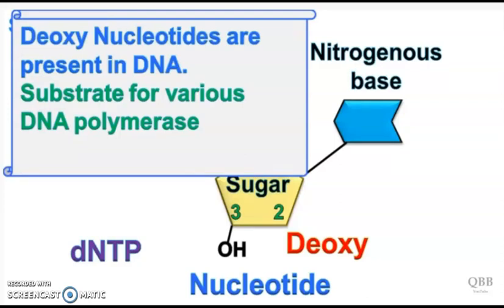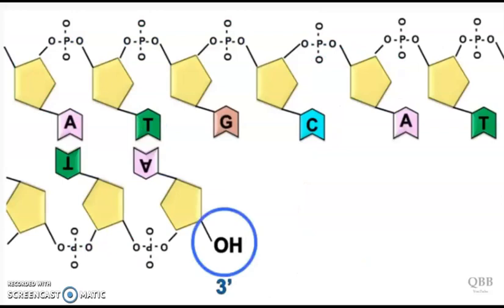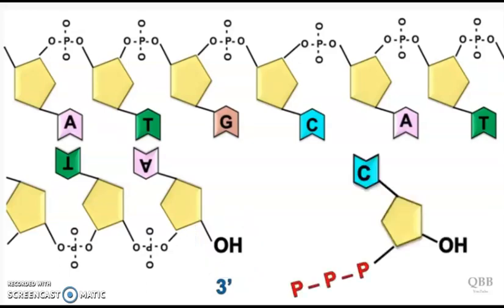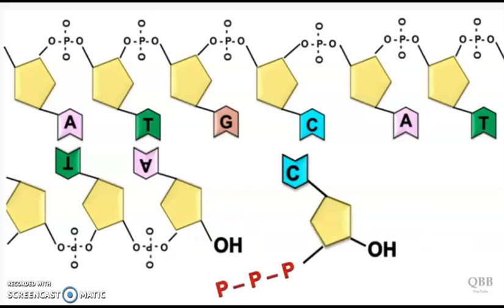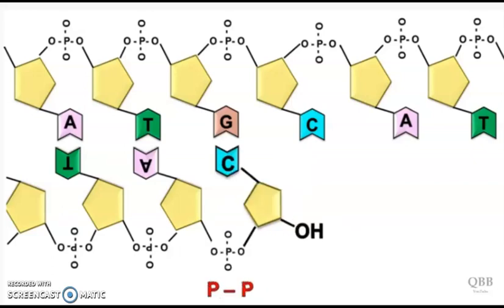The dNTPs are present in the DNA and they are used as a substrate by the enzyme DNA polymerase. All the DNA polymerases like DNA polymerase 1, 2, and 3 use dNTPs as their substrate. The OH group attached at 3' plays an important role in DNA polymerization reaction. During DNA polymerization, there is a reaction between 3' OH and phosphate of the new dNTP.